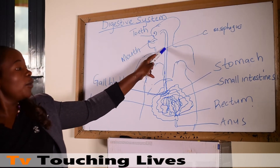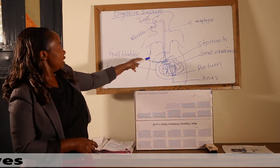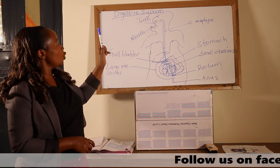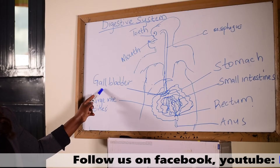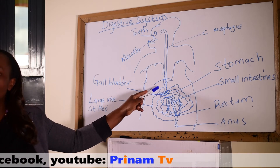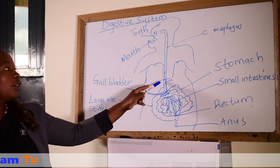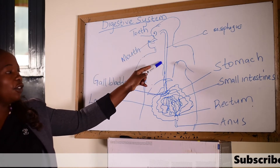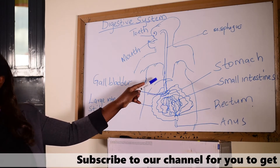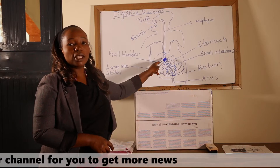From the oesophagus, the food goes down into the stomach. In the stomach, there are digestive juices produced from the gallbladder. These digestive juices aid in the breaking down of the food particles that were brought from the mouth through the oesophagus. The food in the stomach is then digested further into smaller particles.